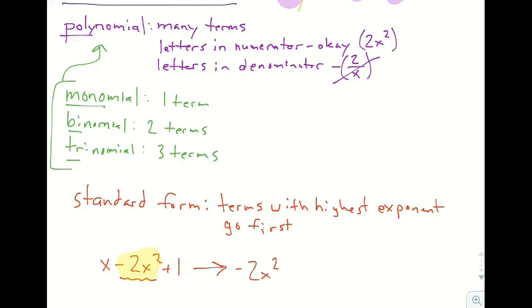The next highest power is going to be this X here, because think of it as X¹. So we're going to write + X. So we've used up that one, we've used up that one, and then we have, finally, just the number 1. That's almost like saying 1X⁰. Whenever it's just a number, it's like having the letter to no power, to a zero power. So this here would be the standard form version of what was on the left, because the highest power terms go first, followed by the next highest power terms all the way to the end.